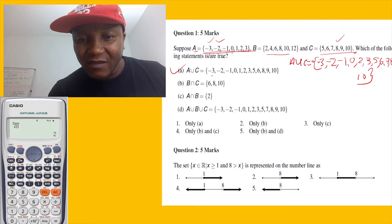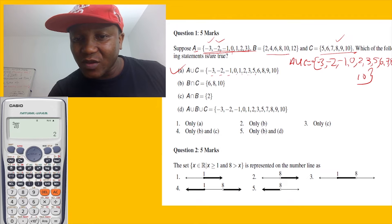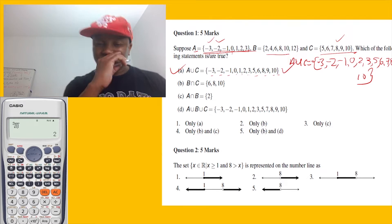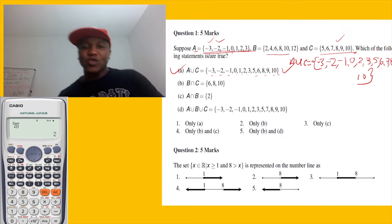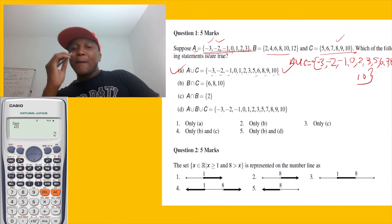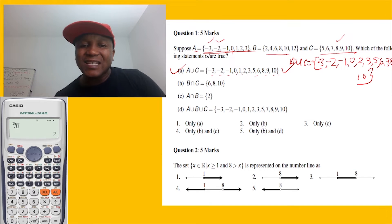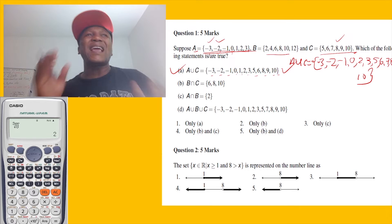That's A union C, and it's true. So statement A is true — negative three, negative two, negative one, zero, one, two, three, five, six, seven, ten. Now let's go to B intersection C.